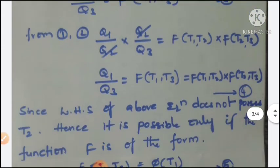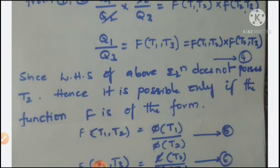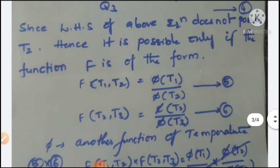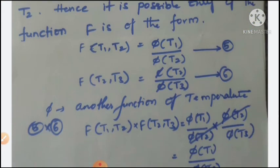Since the left-hand side of equation 4 does not contain T2, it is possible only if the function F takes the form: F(T1, T2) equals π(T1) by π(T2) — equation number 5 — and F(T2, T3) equals π(T2) by π(T3) — equation number 6 — where π is another function of temperature.